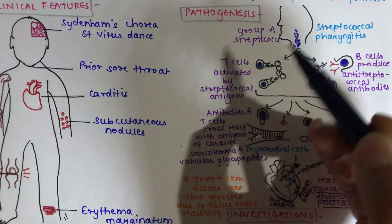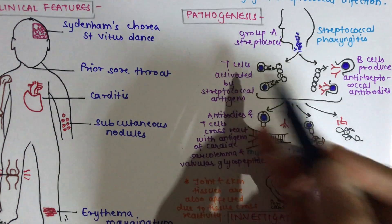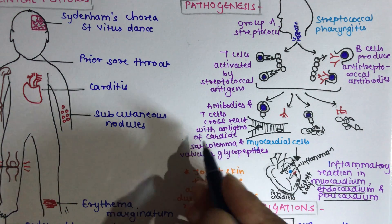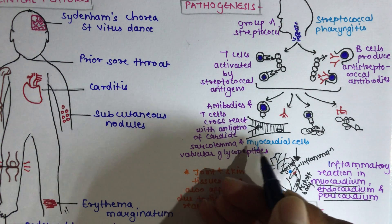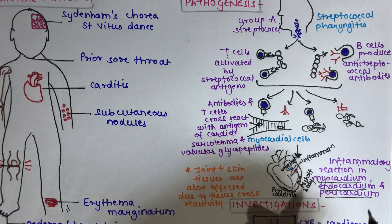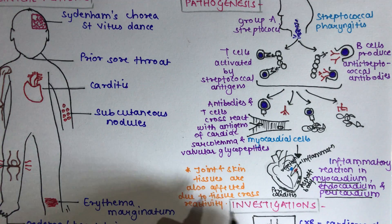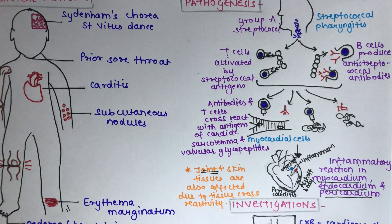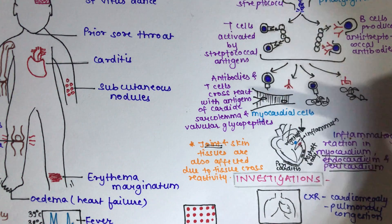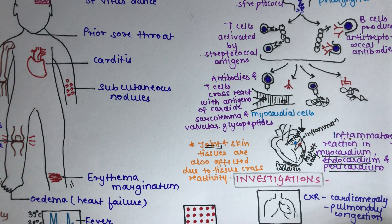In short: the T cells are activated by the streptococcal antigen, and the B cells produce anti-streptococcal antibodies to fight it. These antibodies cross-react with antigens of the cardiac sarcolemma and valvular glycopeptides, leading to an inflammatory reaction in the myocardium, endocardium, and pericardium. The joint and skin tissues are also affected due to this tissue cross-reactivity, producing the rheumatic reaction.